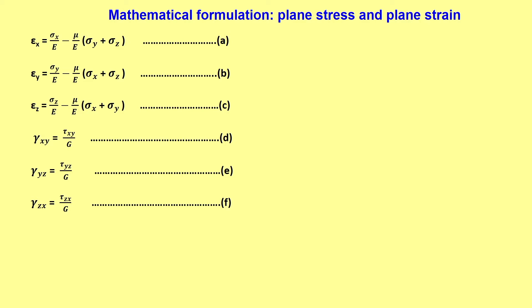We will start with the general linear elastic equations, where epsilon_x is related to sigma_x, sigma_y, and sigma_z. Epsilon_x is equal to sigma_x by E minus mu by E into (sigma_y plus sigma_z). This is where we start with a typical linear elastic problem. Similarly, we have epsilon_y, epsilon_z, the engineering shear strain gamma_xy, gamma_yz, and gamma_zx.